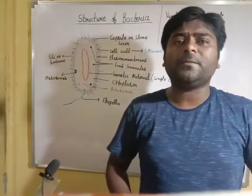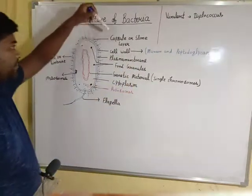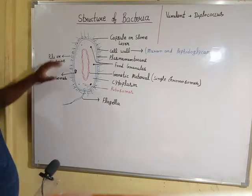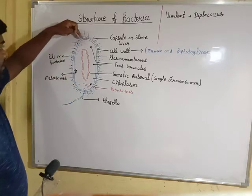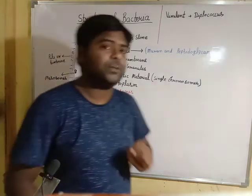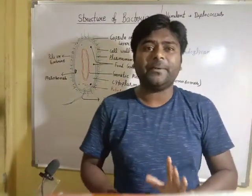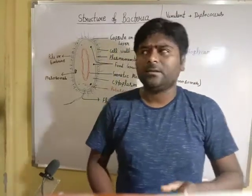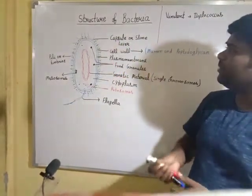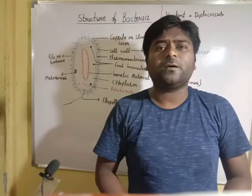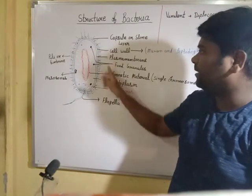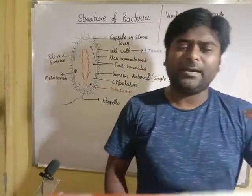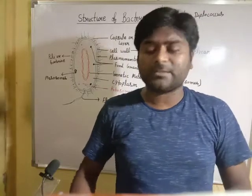Try to understand with the help of this diagram. We will start from outside and then move inside. When we look at bacterial structure, the first thing we observe is a covering before the cell wall — one additional covering. That additional covering is known as the capsule, also called the slime layer, and it provides extra protection to bacteria.